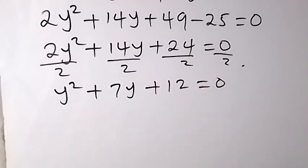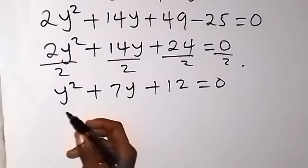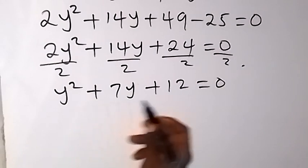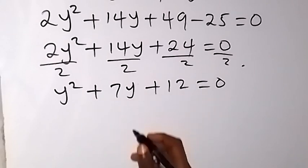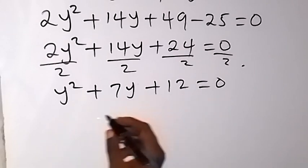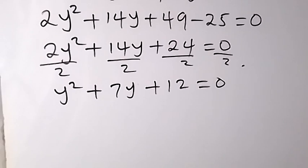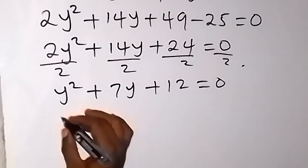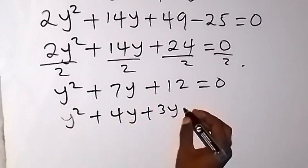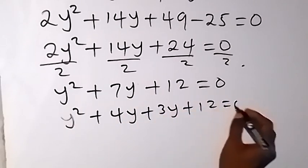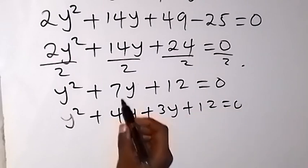This will give us y squared plus 7y plus 12 equals 0. Now we can solve this quadratic equation to find the value of y. When we multiply the first and the last, we have 12y squared. The factors of that will be 4y and 3y. So we have y squared plus 4y plus 3y plus 12, which gives us 0.